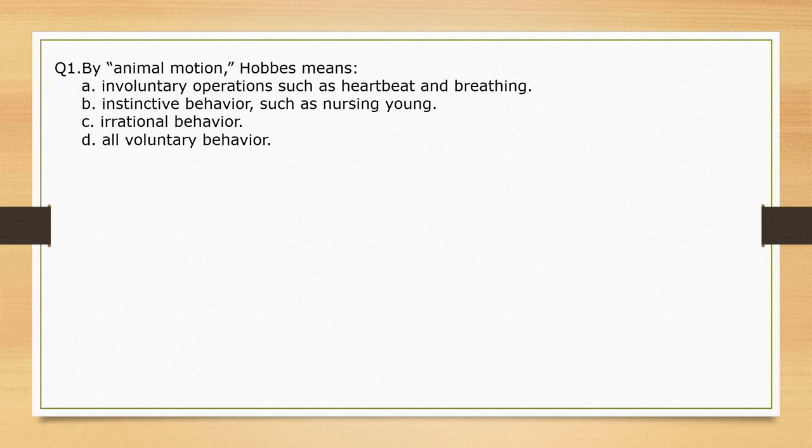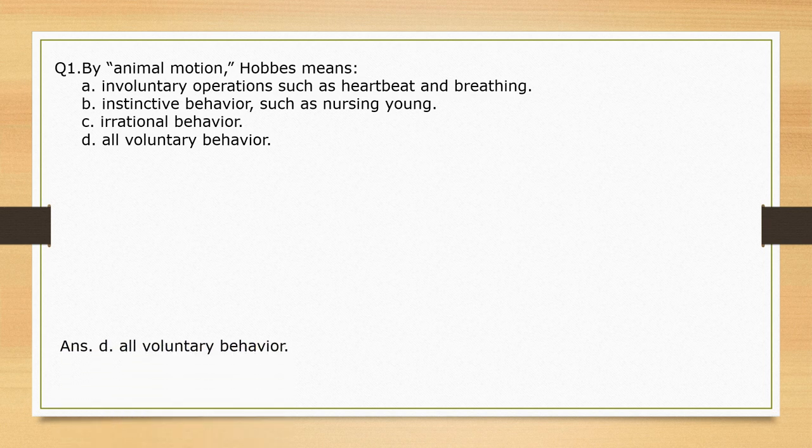By 'animal motion' Hobbes means — options are given. What is the correct option? The correct option is option D: all voluntary behavior.